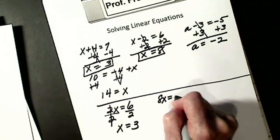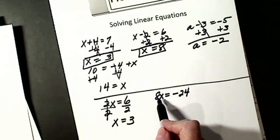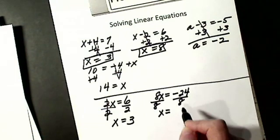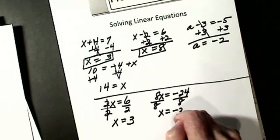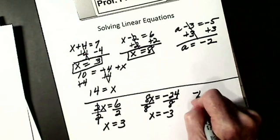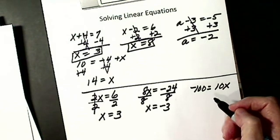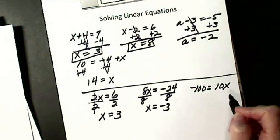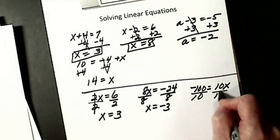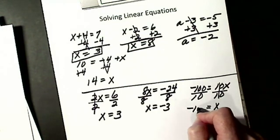Let's say I have 8x equals negative 24. I want x alone, but this time I have 8 times x. So to get rid of it, I divide by the coefficient of x. Unlike signs give a negative, so I get x is negative 3. The x could be on the other side: negative 100 equals 10x. The goal is I want x alone, have to get rid of the 10. It's attached by times, so I divide. So I get x equals negative 10.